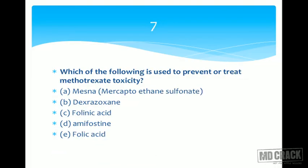Question number 7: Which of the following is used to prevent or treat methotrexate toxicity? Options include mesna, dexrazoxane, folinic acid, amifostine, and folic acid. Methotrexate is an anti-metabolite and folate antagonist that inhibits the conversion of folic acid to folinic acid in nucleic acid synthesis.